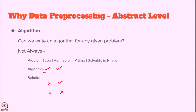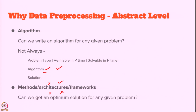When we cannot write an algorithm, we write something else. We use intelligence-based methods like artificial intelligence techniques — machine learning or deep learning methods — where you cannot find an optimum solution in a given time. It is not possible to find an optimum solution but you can still try to find the best optimal solution for a given problem. Those deep learning methods are called architectures. There are also several machine learning methods and frameworks we use to solve such problems where we cannot write a complete algorithm in a given amount of time.